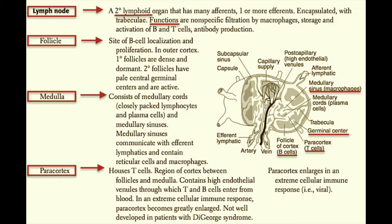The lymph node is broken into the follicles, the medulla, and the pericortex. The follicles are located in the cortex and are the site of B cell localization and proliferation. In the outer cortex, we see both primary and secondary follicles. Primary follicles are smaller, more dense, and dormant — they contain naive or inactivated B cells. Secondary follicles have pale central germinal centers, which are the site of B cell activation, proliferation, and expansion.